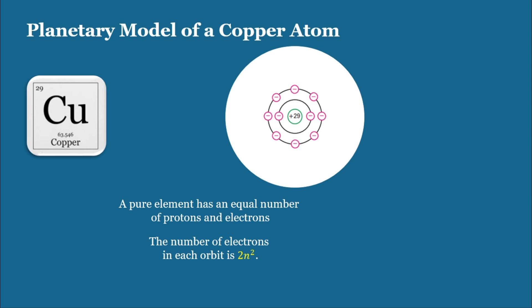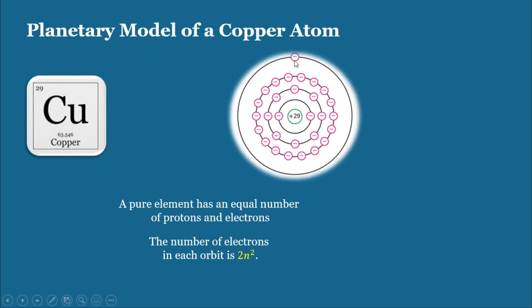Now, there are 29 electrons for a copper atom. We still lack 19 electrons. Therefore, there is a need for a third orbit. So, if n is equal to 3, 2 times 3 squared is equal to 18 electrons. Since we need 19 electrons, we still lack 1 electron. To complete our illustration, there is a fourth orbit and on that fourth and final orbit, we only have 1 electron.